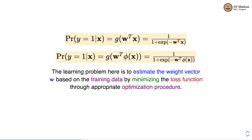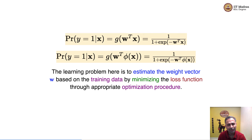So we have seen two types of logistic regression: one that uses the feature vector as it is, and one where we first perform feature transformation and then apply the logistic regression steps — linear combination followed by the sigmoid activation. The learning problem is to estimate the weight vector. The feature matrix x and the labels y are known from the training set; we need to estimate the weight vector w by minimizing a loss function through an appropriate optimization procedure. In the next session, we will look at the loss function used in logistic regression.